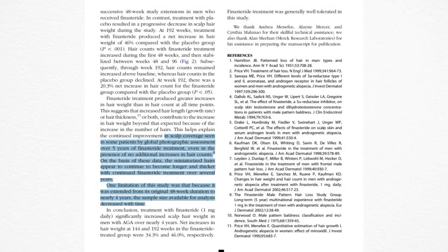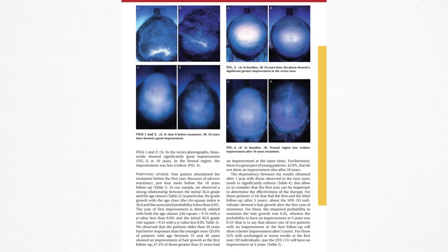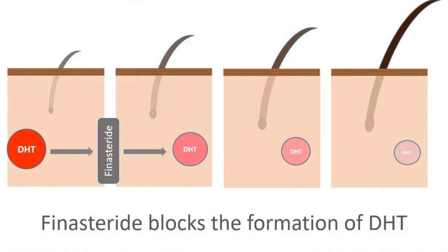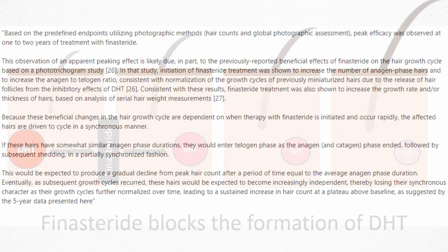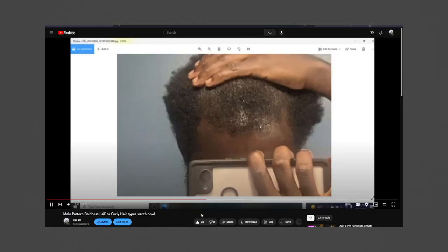Finasteride helps improve the growth cycle of hair by shortening the resting phase and making more hairs enter the active growing phase. As 5-alpha reductase enzymatic activity decreases in the scalp due to finasteride inhibition, DHT decreases, and since DHT suppresses hair growth, its reduction leads to better hair growth results. The change in the hair growth cycle happens quickly after starting finasteride and can cause the affected hairs to grow in a synchronized state, meaning they will all enter the resting phase and shed around the same time.